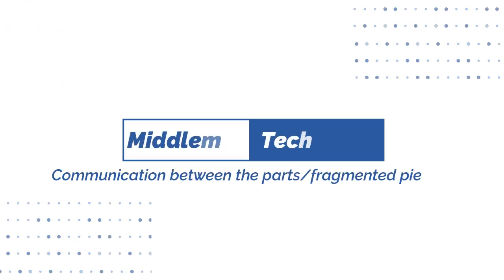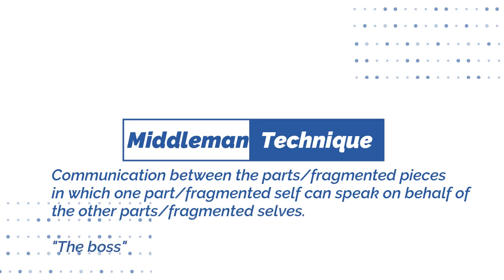The next technique is known as the middleman technique. Basically the idea is that one particular alter is able to speak up for the others — one fragmented part of you is able to speak up for all the other fragmented pieces. It's like looking for the mediator, the one who has the most confidence and will step out in front and participate in the treatment process. A psychotherapist using the middleman technique will rely on the alter who seems to be most present, maybe protecting the others, and able to make sense of things and participate because he or she is stronger.